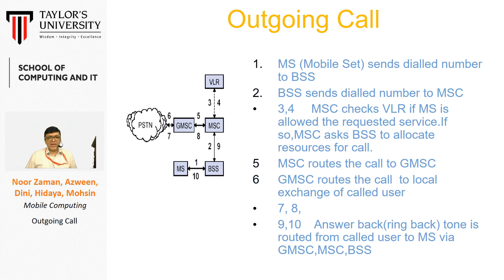You can see from here: MS stands for the mobile station, which is also known as the mobile handset. Then there is the BSS, which is known as the base station service center, and then the MSC — the mobile switching center — and then VLR, which stands for visitor location register. And then the GMSC, which is the gateway mobile switching center.